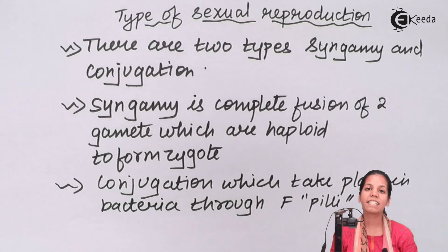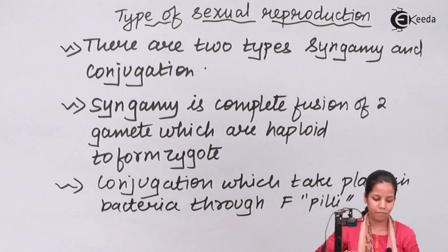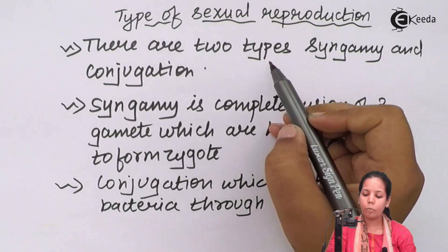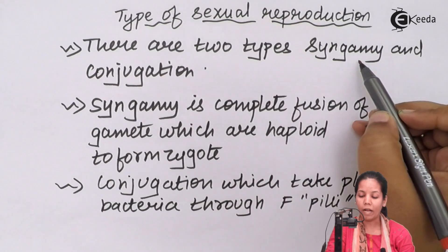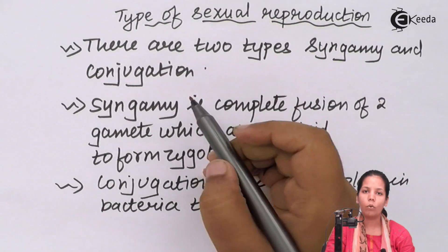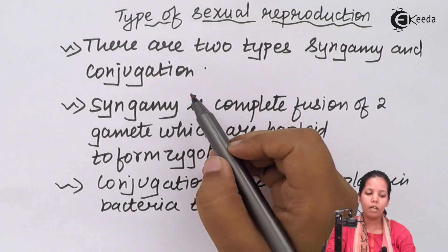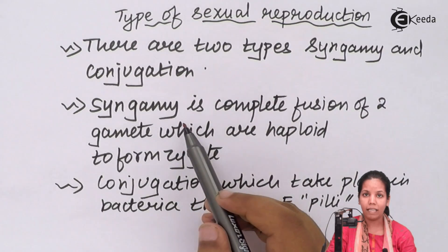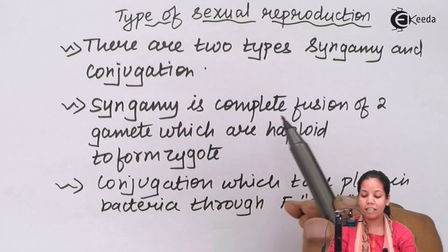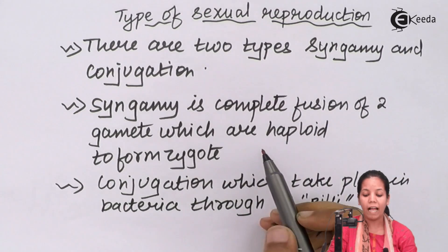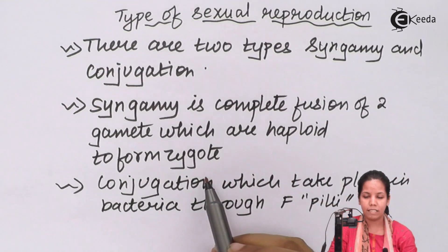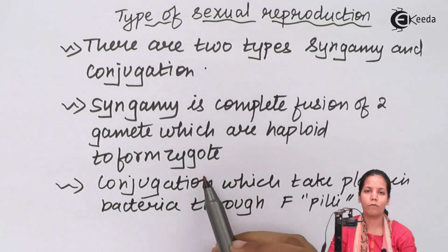Another type is syngamy. In syngamy, fusion of gametes is seen. So basically the two types of sexual reproduction are syngamy and conjugation. Syngamy is nothing but the complete fusion of two haploid gametes to form a zygote, which is eventually a diploid organism.